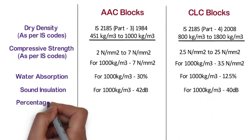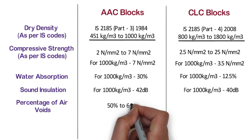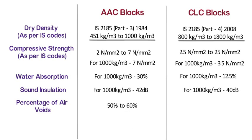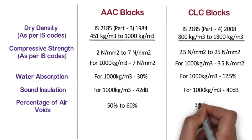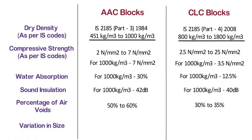Percentage of air voids. Autoclaved aerated concrete contains nearly 50% to 60% of air voids. Whereas, cellular lightweight concrete contains 30% to 35% of air voids. Variation in size. In case of AAC blocks, the size variation is ±1.5 mm. Whereas, in case of CLC blocks, the size variation is ±5 mm.